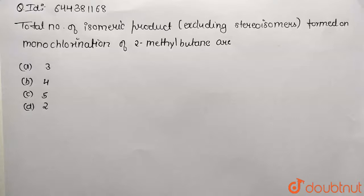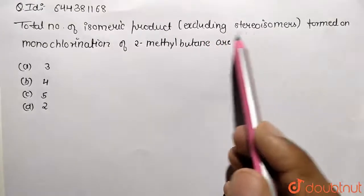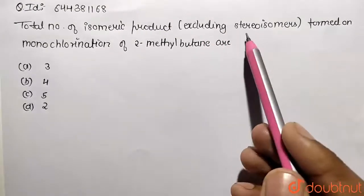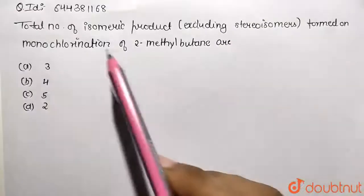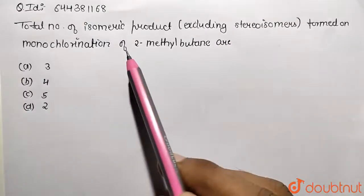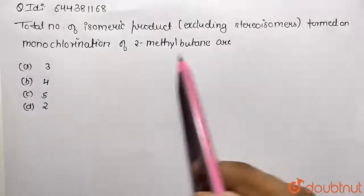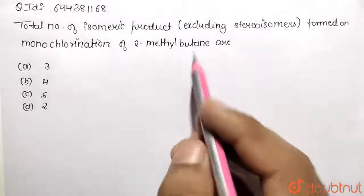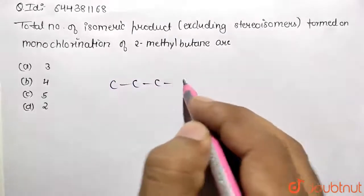In this given question, we need to identify the total number of isomeric products, excluding the stereoisomers. So we do not need to take the stereoisomers — only the structural isomers — formed on the monochlorination of 2-methylbutane. This is the given compound.